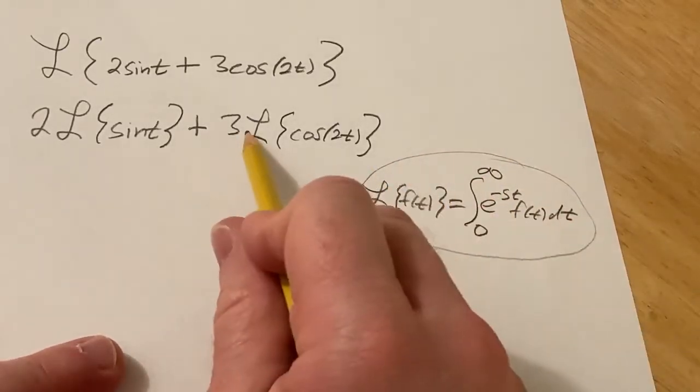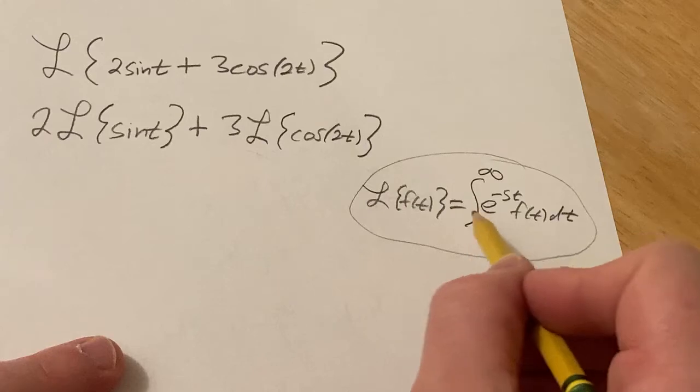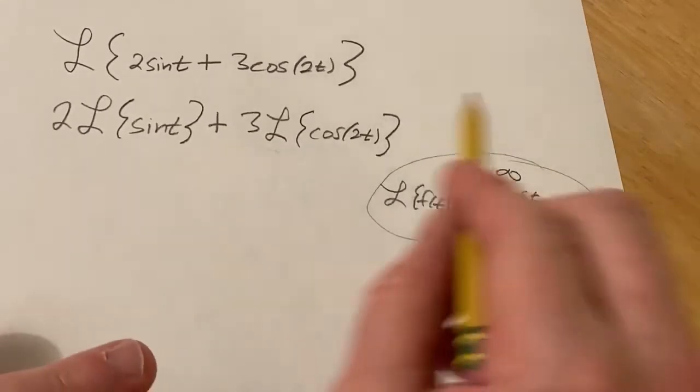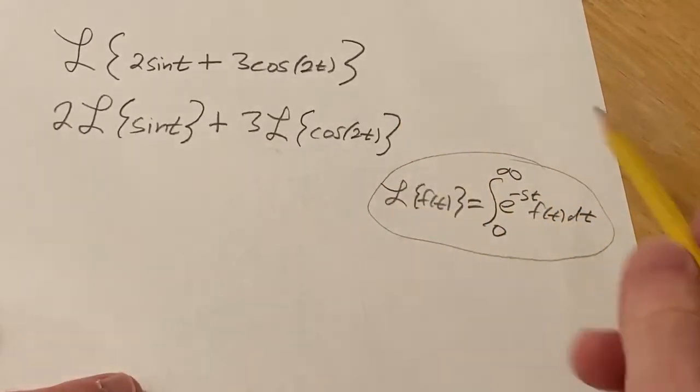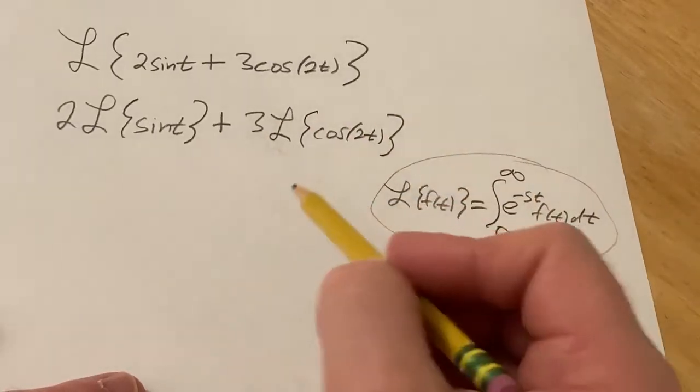So that's why you can pull numbers out, because if this converges you can use all the properties of integrals and pull out constants. So it is linear. Also it's additive. As long as everything converges, you can add up integrals.